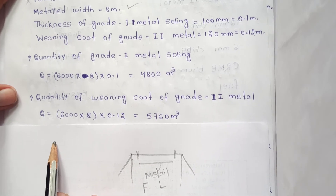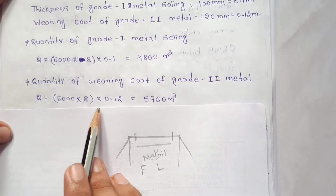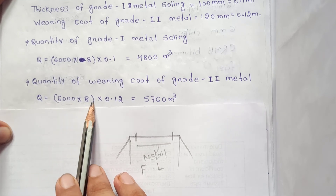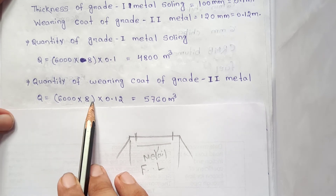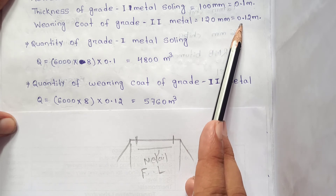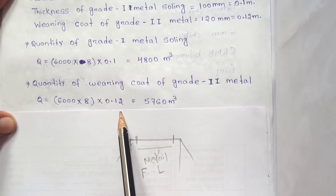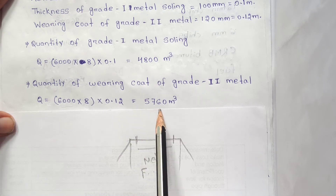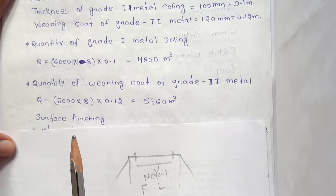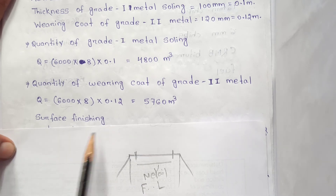For the wearing coat of Grade 2 metal: quantity = area × thickness = length × carriage width × 0.12 m.